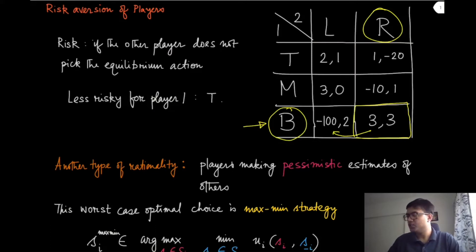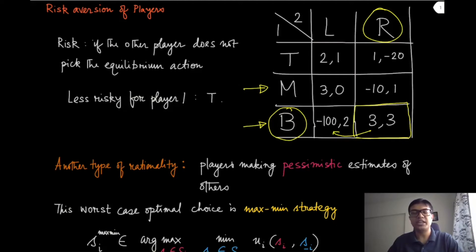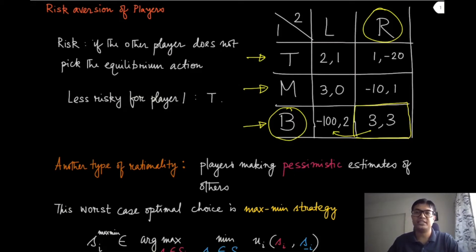If you look at strategy B for player one, the minimum value that player can get is minus 100. While if it plays M, the minimum value reduces a little bit — the negative value reduces to minus 10. And if you look at T, you can actually get a much better outcome, which is 1. So it is not as good as the Nash equilibrium but not too bad either for player one.